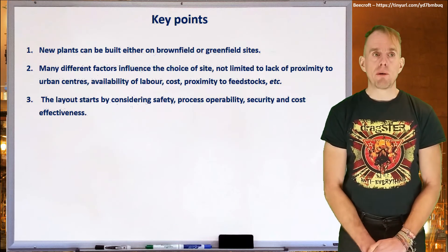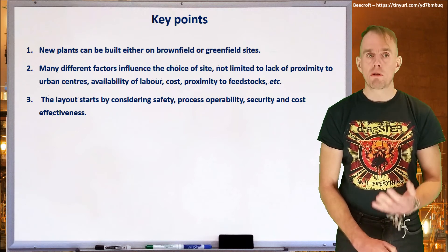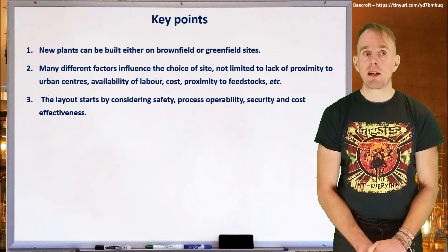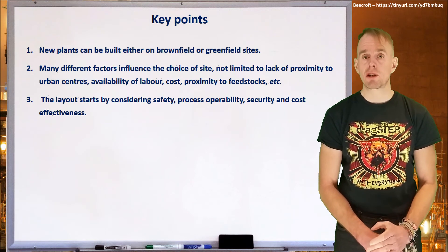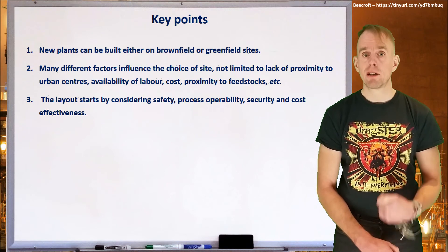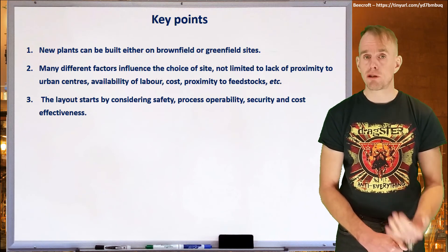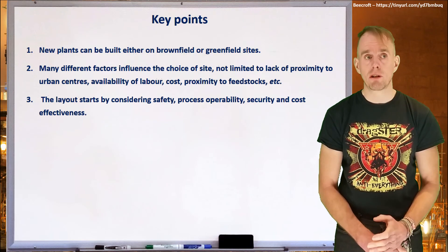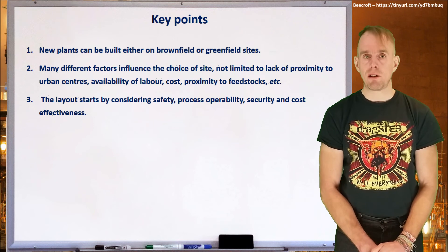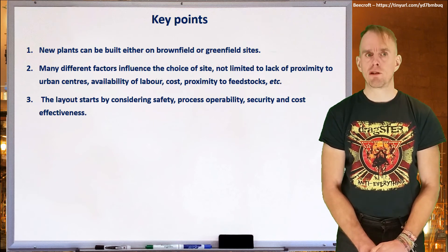To recap: new plants can be built on either brownfield or greenfield sites. There are many different factors that influence the choice of a site, including proximity to urban centres, proximity to raw materials, availability of labour, cost, and proximity to feedstocks. We start the layout process by considering safety first and foremost, then process operability, security, and then cost effectiveness.